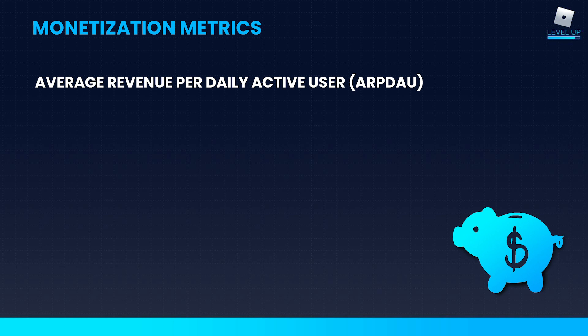Your average revenue per daily active user, similar to our engagement metrics but on a monetization standpoint, is a good snapshot of the overall health of the game. It encompasses both the conversion rate — those motivated to spend — as well as those who have spent before. So overall, this tells you whether there are successful systems in your game motivating players to want to spend. If I see issues here, this is the highest-level metric I look at first before diving into the next two.